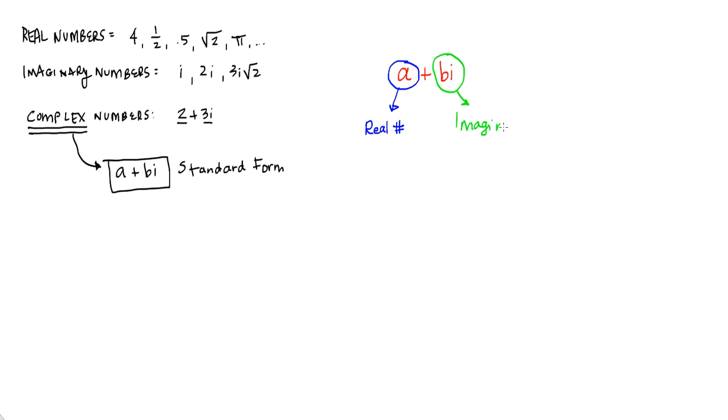When we combine those two together, we get something called a complex number. And in the case of this standard form, a and b are real numbers. So we could come up with tons of different examples of complex numbers.